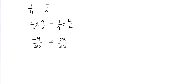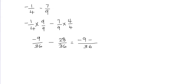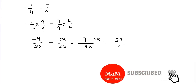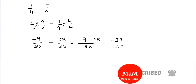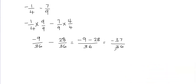Now we can easily go ahead and subtract these fractions. I'll write the common denominator, which is 36. In the numerator I have negative 9, then the minus sign, then 28. Negative 9 minus 28 gives me negative 37. We keep the denominator as it is since that's our common denominator, giving us negative 37 over 36.